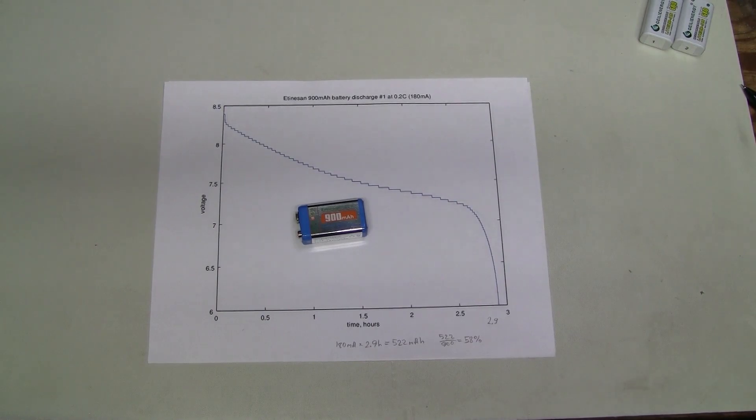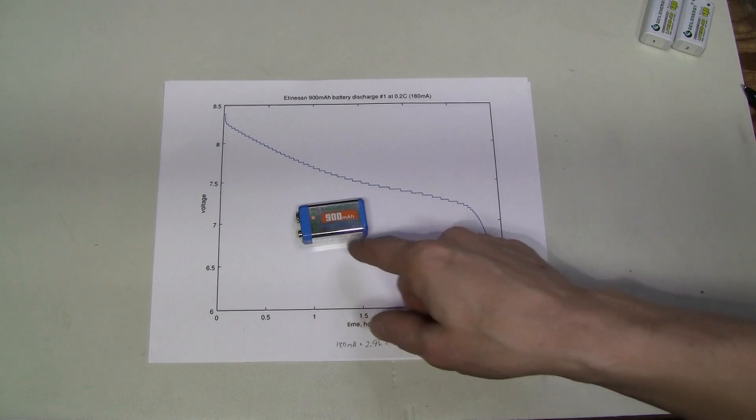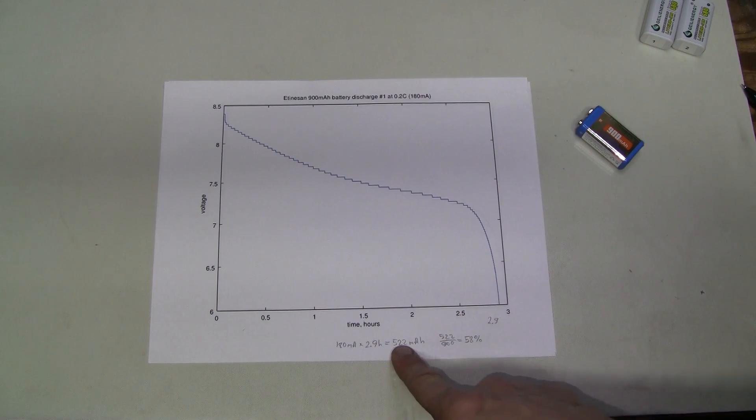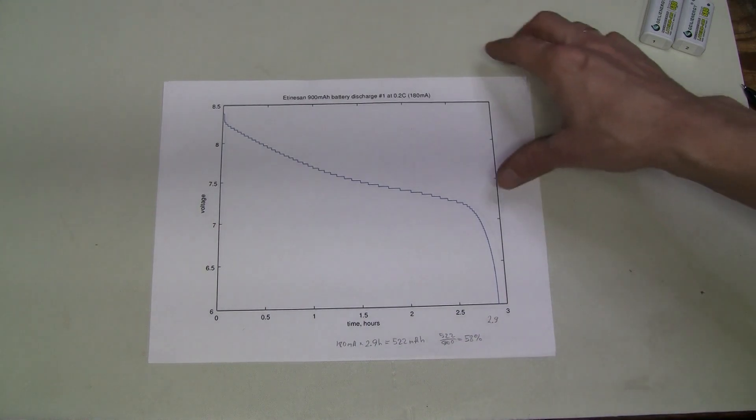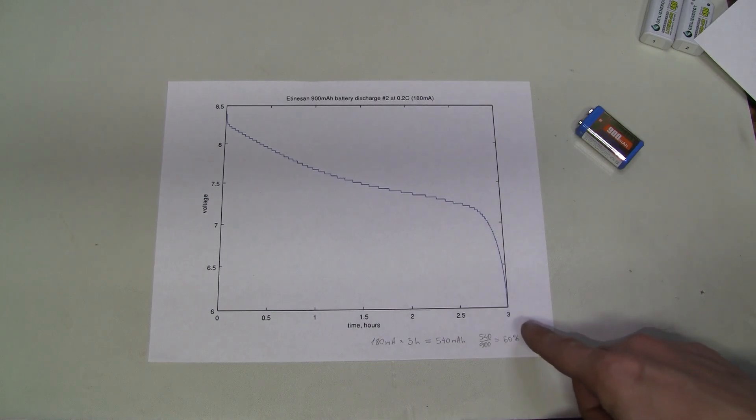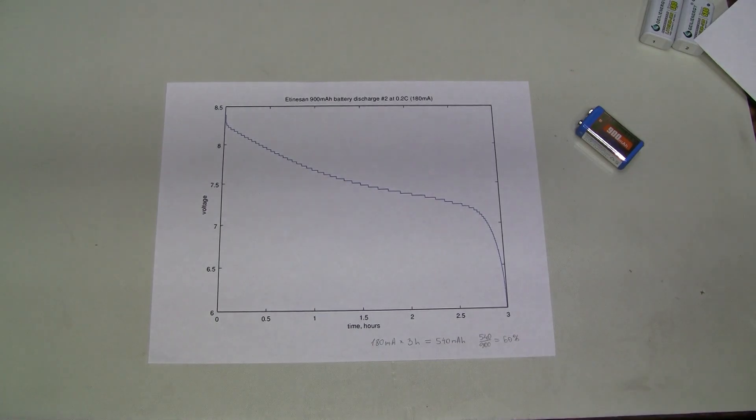And finally this one. It is rated at 900 mAh but look at this. 2.9 hours which is 522 mAh or 58% of the rated capacity. And the discharge number 2 was a bit better, 3 hours, 540 mAh and still about 60% of the rated capacity.